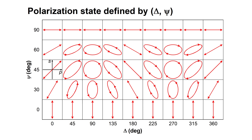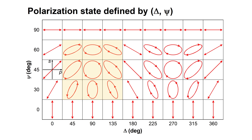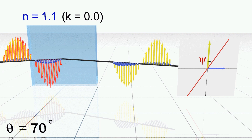This figure summarizes the polarization state defined by delta and psi. When delta is 0 or 180 degrees, the polarization state is always linear, and the orientation of the linear polarization is determined by psi. When psi is 0, there is only s-polarized wave, and when psi is 90 degrees, only the p-polarized component exists, and polarization is linear independent of delta. We observe elliptical and circular polarization in the intermediate ranges. This region shows left-handed elliptical and circular polarizations, and this region indicates a right-handed polarization state. Importantly, all possible polarization states of the reflected light can be described by delta and psi.